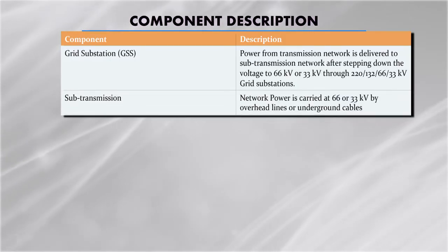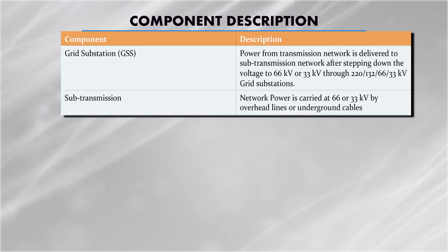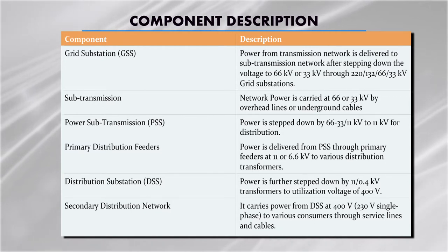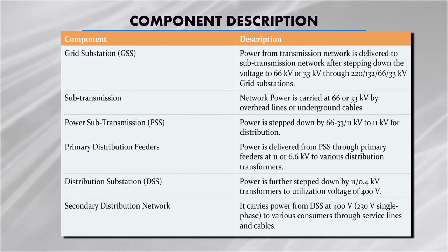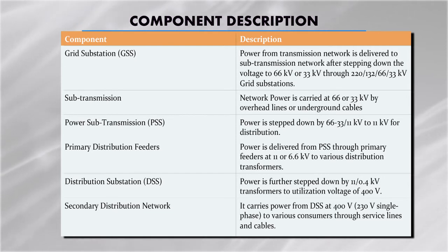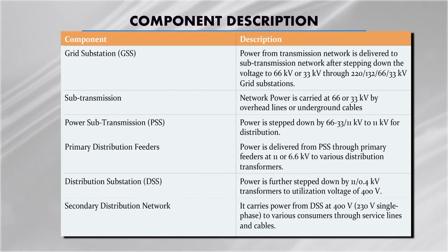The sub-transmission network carries power at 66 to 33 kV by overhead lines and underground cables. At the distribution substation, power is further stepped down by 11/0.4 kV transformers. A transformer is used as either a step-up or step-down transformer — that means voltage can be stepped up or stepped down from one level to another for utilization purposes. The transformer is a very essential equipment for all power transmission and distribution systems.